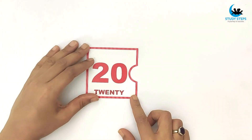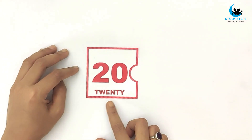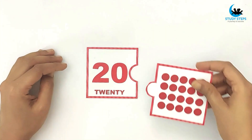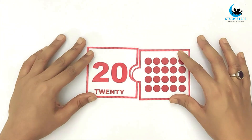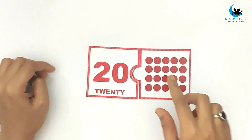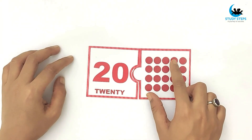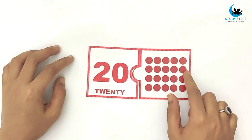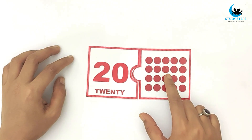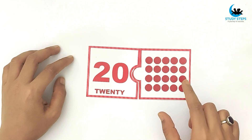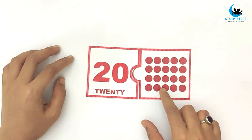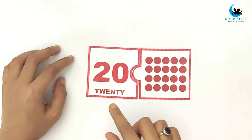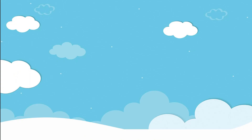Twenty, T-W-E-N-T-Y, twenty. One, two, three, four, five, six, seven, eight, nine, ten, eleven, twelve, thirteen, fourteen, fifteen, sixteen, seventeen, eighteen, nineteen, twenty. Twenty dots. So children,